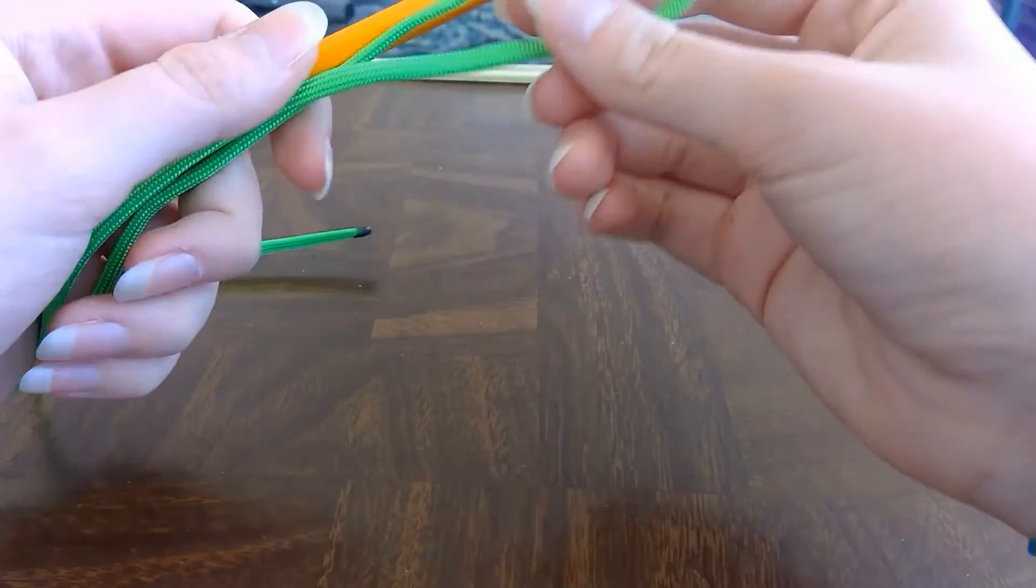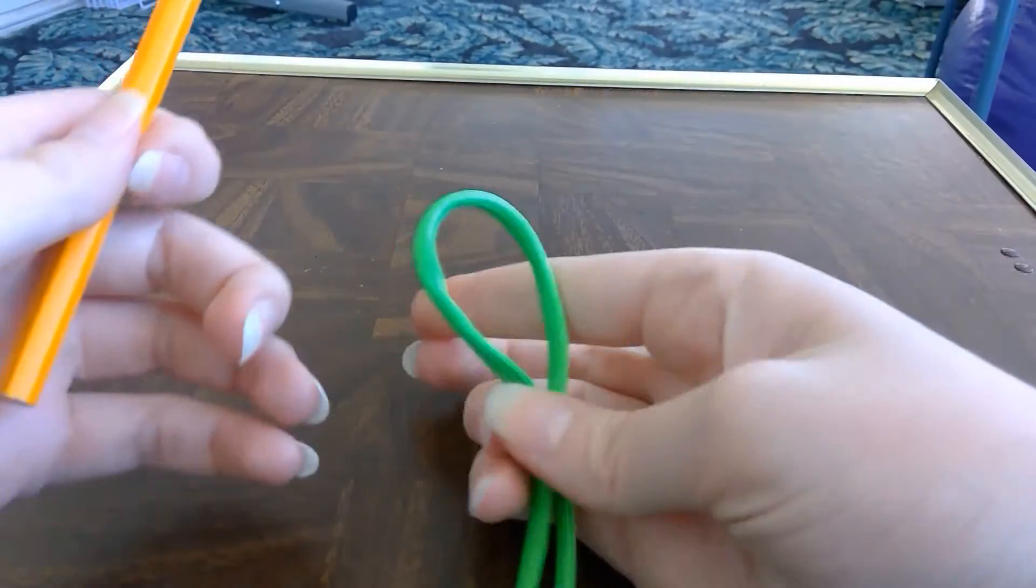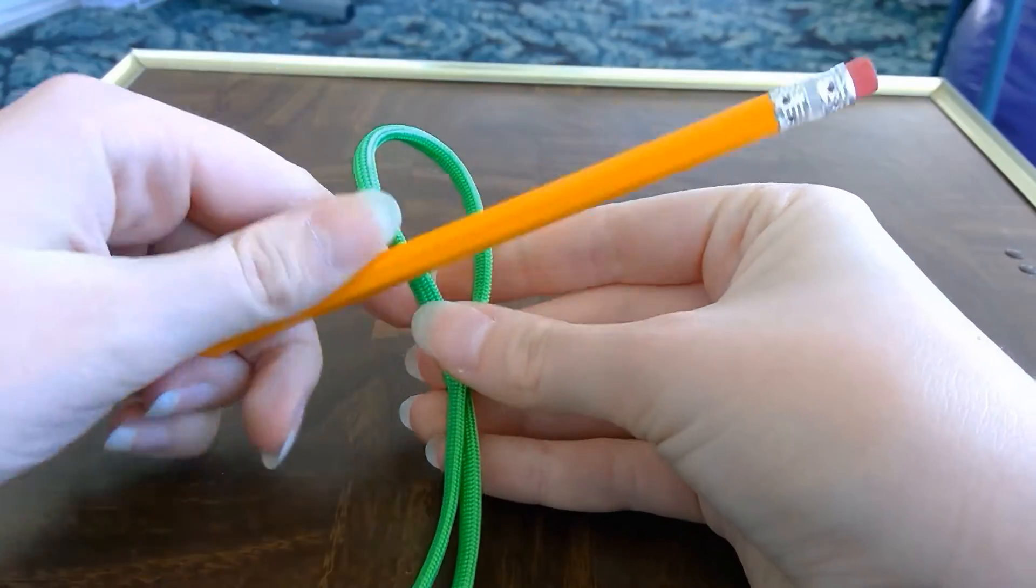To tie this knot, you want to make a loop in the middle of your rope and put it under your stick.